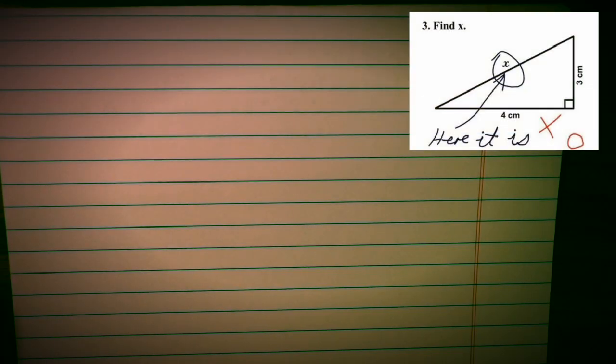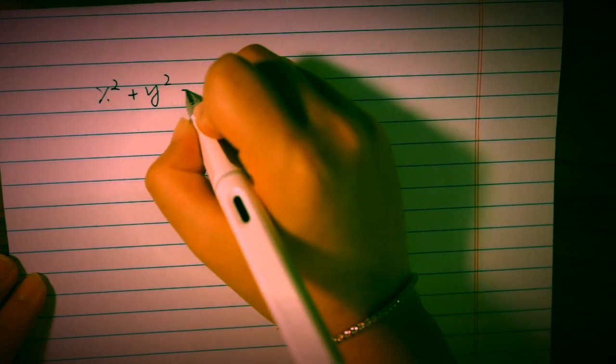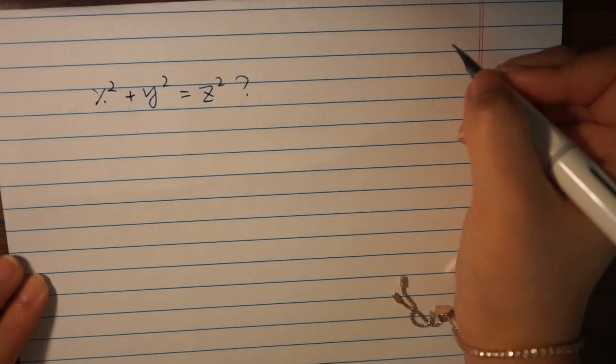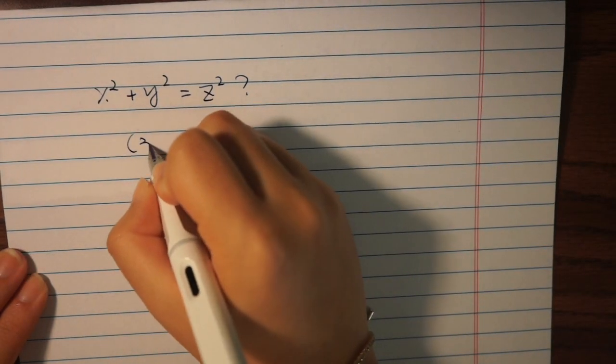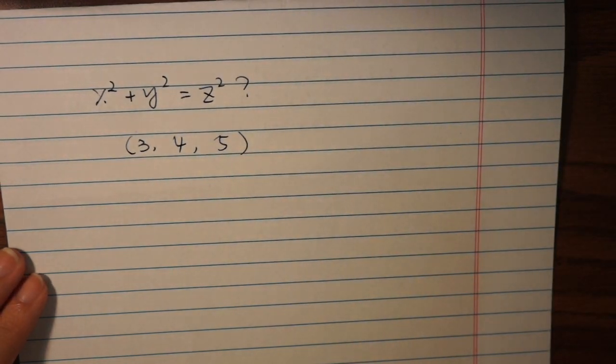First of all, what about x squared plus y squared equals z squared? Well, this equation has lots of solutions, right? Because it is the fundamental formula for the Pythagorean triangles. 3, 4, 5 is just an example of the solutions.